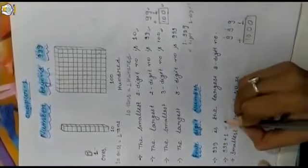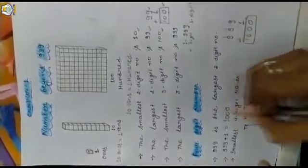Now let's see 4-digit numbers. We know that 999 is the largest 3-digit number. When we add 1 to the largest 3-digit number — 9 plus 1 is 10, 9 plus 1 is 10, 9 plus 1 is 10 — we will get 1000.